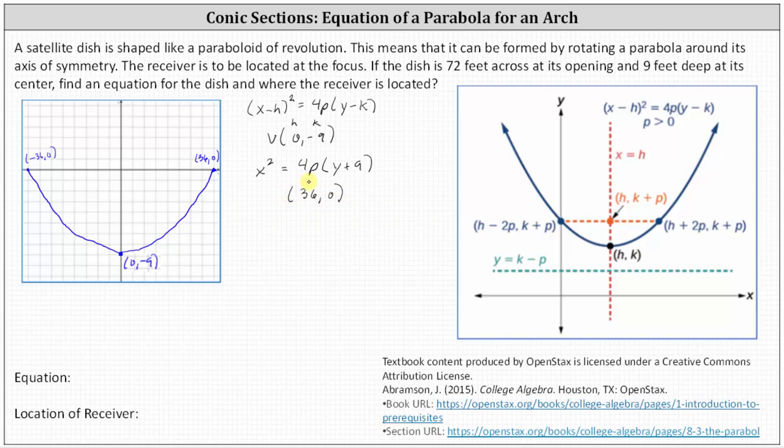We will now substitute 36 for x and 0 for y, which will allow us to find p or 4p. This gives us 36² = 4p(0 + 9) or just times 9.